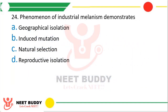Question number 24. The phenomenon of industrial melanism demonstrates: geographical isolation, induced mutation, natural selection, or reproductive isolation? The correct answer is option C — it demonstrates natural selection.